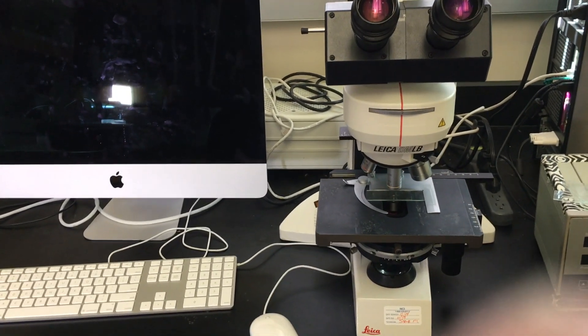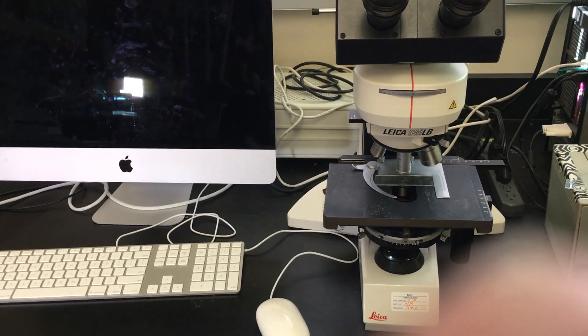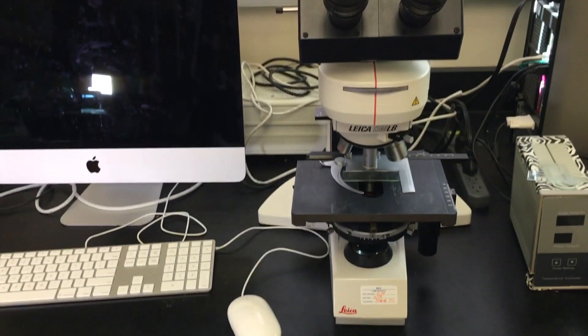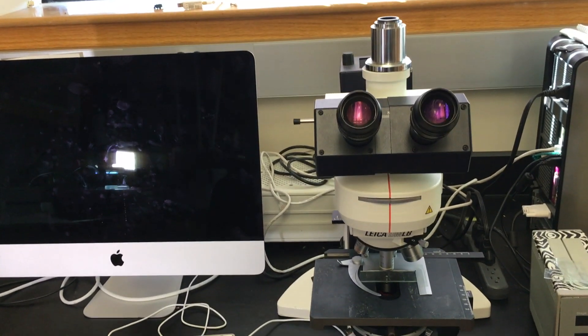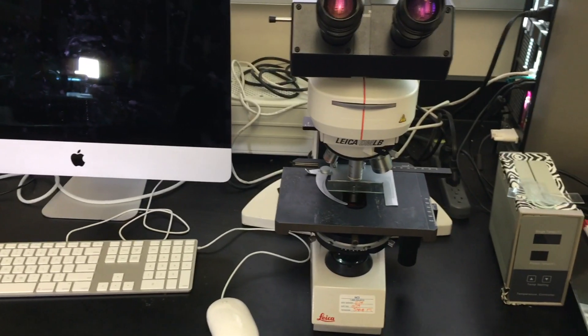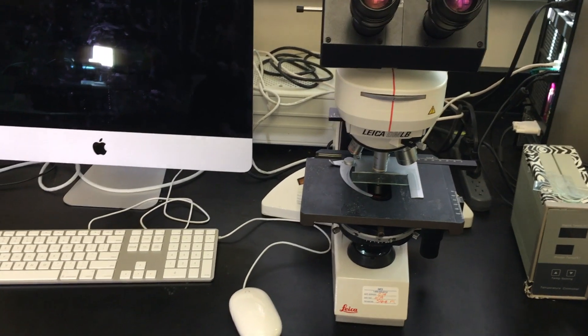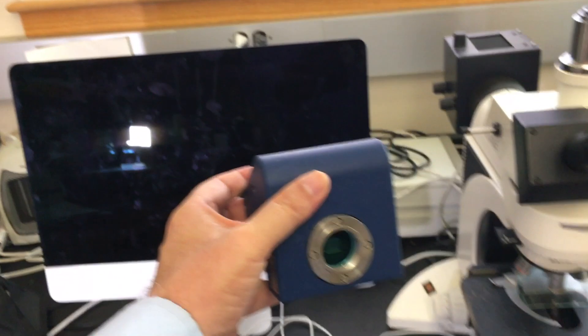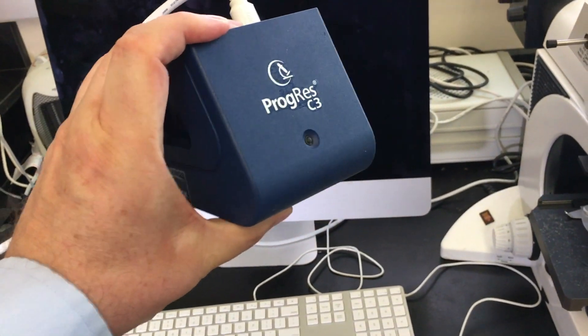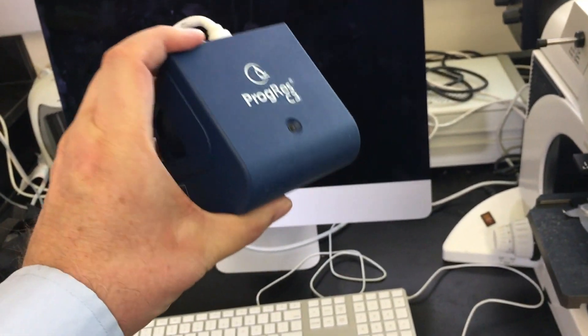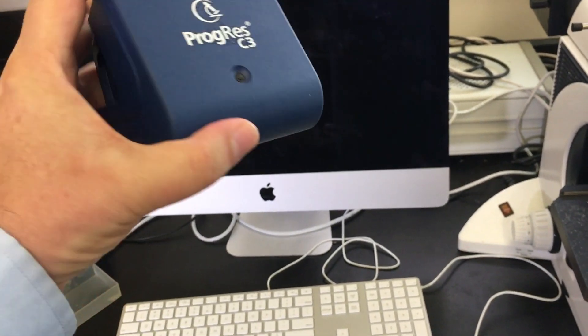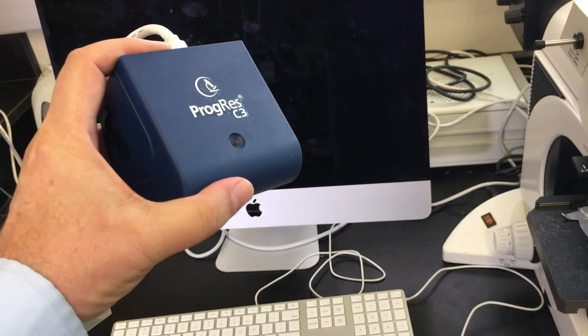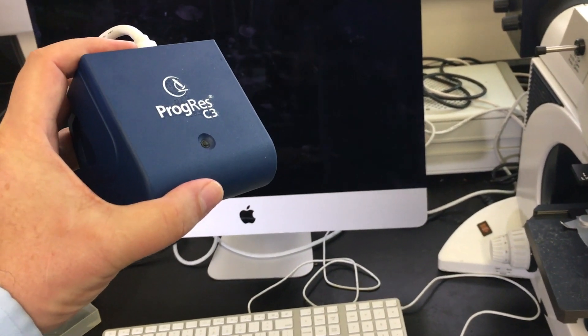This is the big scope, this is my Leica DMLB. It's also pretty nice. This has a scientific imaging setup on it - the Progres C3. It's a nice little camera, kind of limited what you can do with it, but it interfaces nicely with the computer over there.